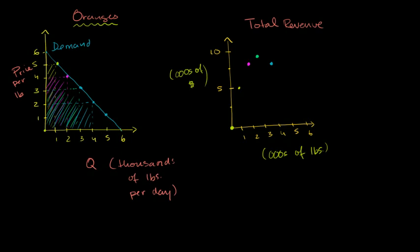And then if the price is $1 per pound, I can sell 5,000 pounds. My total revenue is going to be 1 times 5, or $5,000. So if I produce 5,000 units, I can get $5,000 of revenue. And if the price is zero, the market will demand 6,000 pounds per day if it's free, but I'm not going to generate any revenue because I'm giving it away for free. So our total revenue curve — and if you've taken algebra, you would recognize this as a downward-facing parabola — looks something like that.